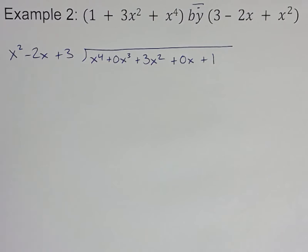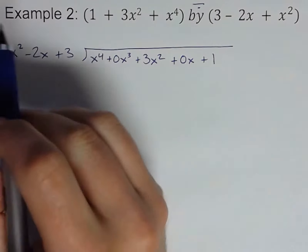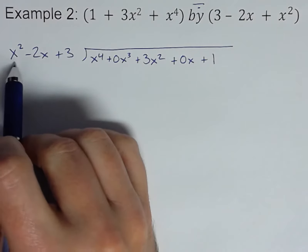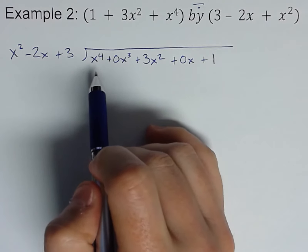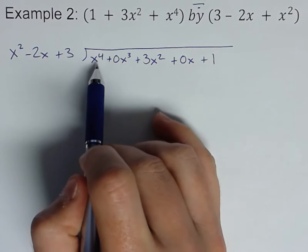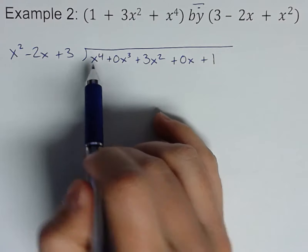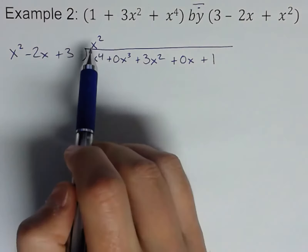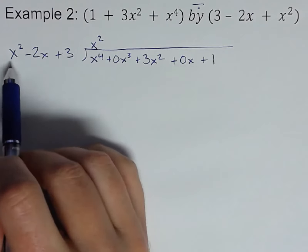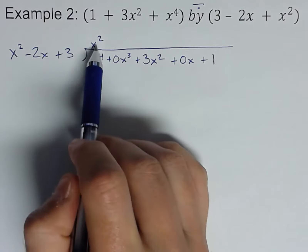Again, that's how I like to write them, plus 1. Okay, looks a little longer but we're not intimidated. It's really the same process we just went through. So start here: x squared into x to the fourth, or another way to look at it, I think it's easier, x squared times what is x to the fourth? That's x squared.